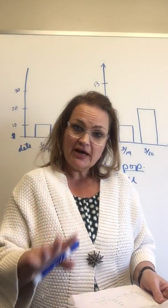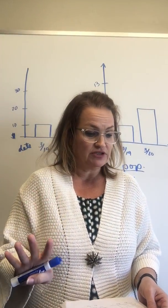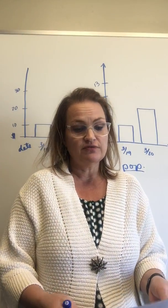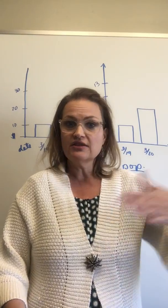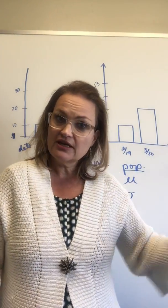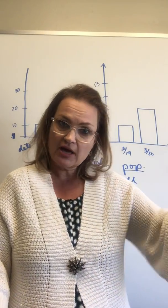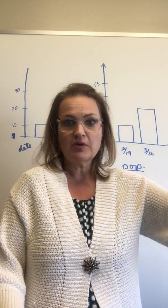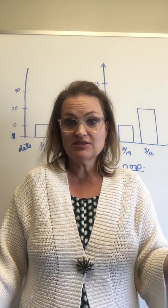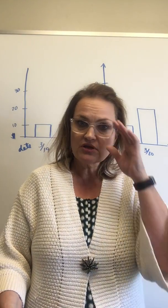We talked about how there's four different types of averages and a company could say we pay an average of $45,000 a year. And then the union could say, no, the average is only $40,000 a year. We need a raise, would be making their point. And the company would be saying we're doing pretty well. We've got this number. So they can both be right.